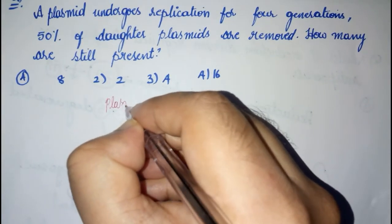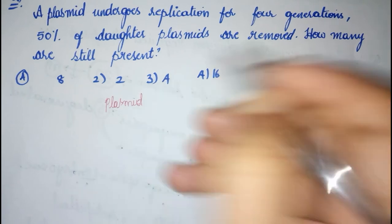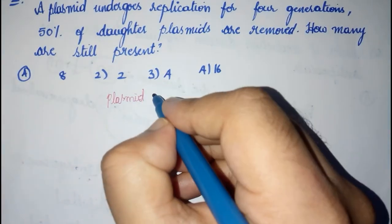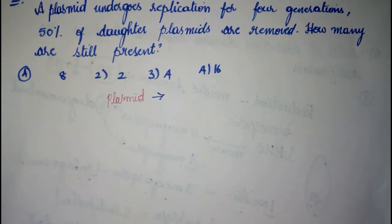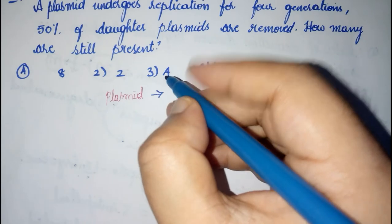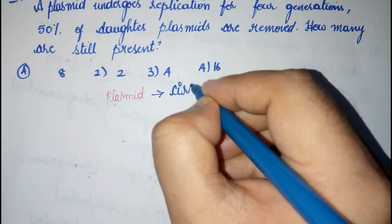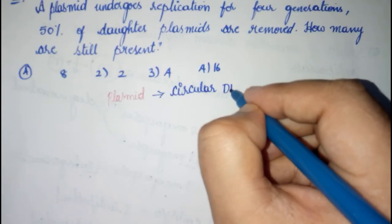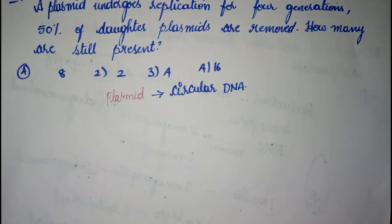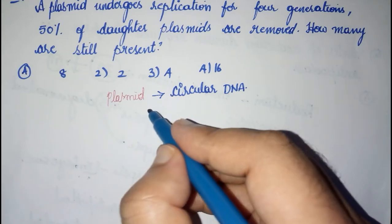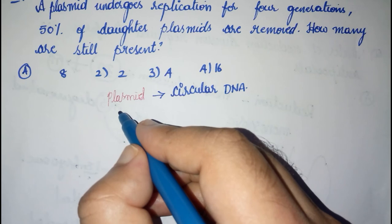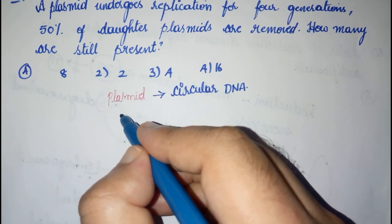We know a plasmid is basically a circular DNA molecule that is usually present in bacterial cells. Now this plasmid is undergoing replication. We know that when replication happens, the DNA content doubles.